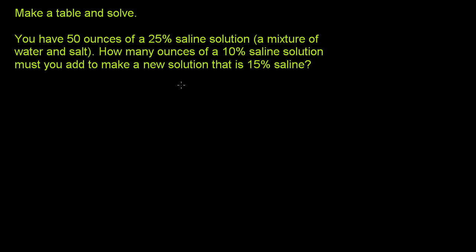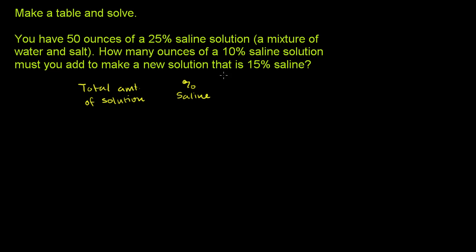So let's make this table. Let's write total volume of solution as one column, then the next column will be percent saline. We can use this information to figure out the total amount of saline.